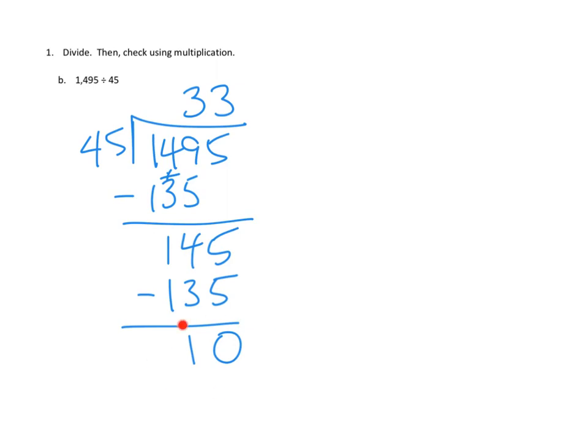And again, I'm going to check. This looks like my remainder, but could I have made more groups of 45? Nope, couldn't have done it. So I think I'm happy with my answer. My quotient is 33, and my remainder is 10.